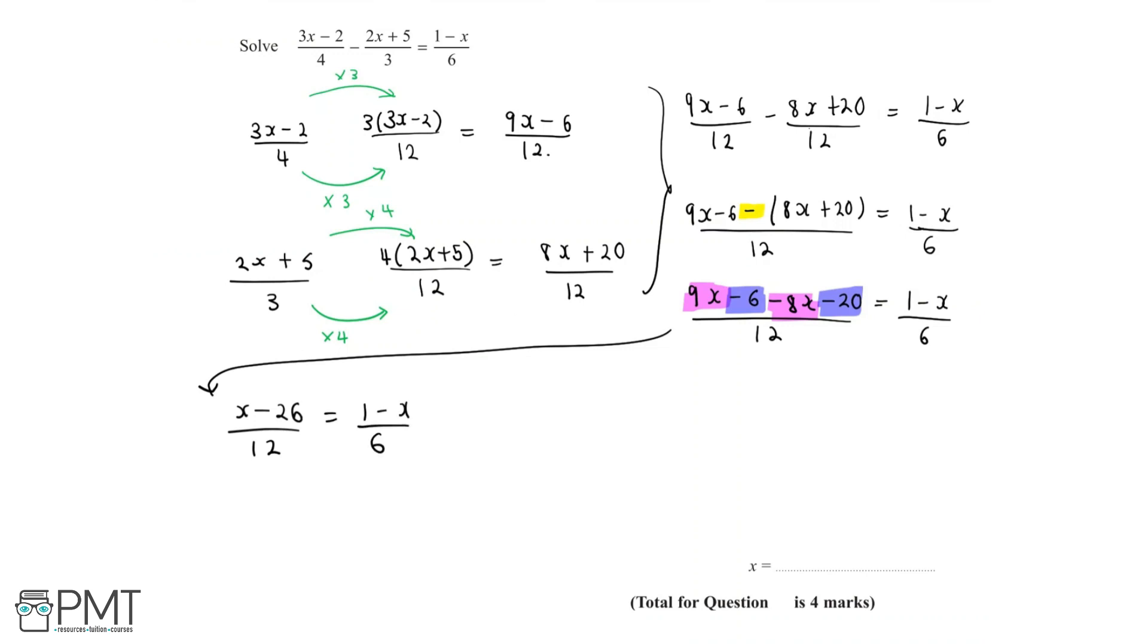And now we need to cross multiply. So we'll do 6 multiplied by x minus 26 is equal to 12 multiplied by 1 minus x. We can expand this and we're left with 6x minus 156 is equal to 12 minus 12x.